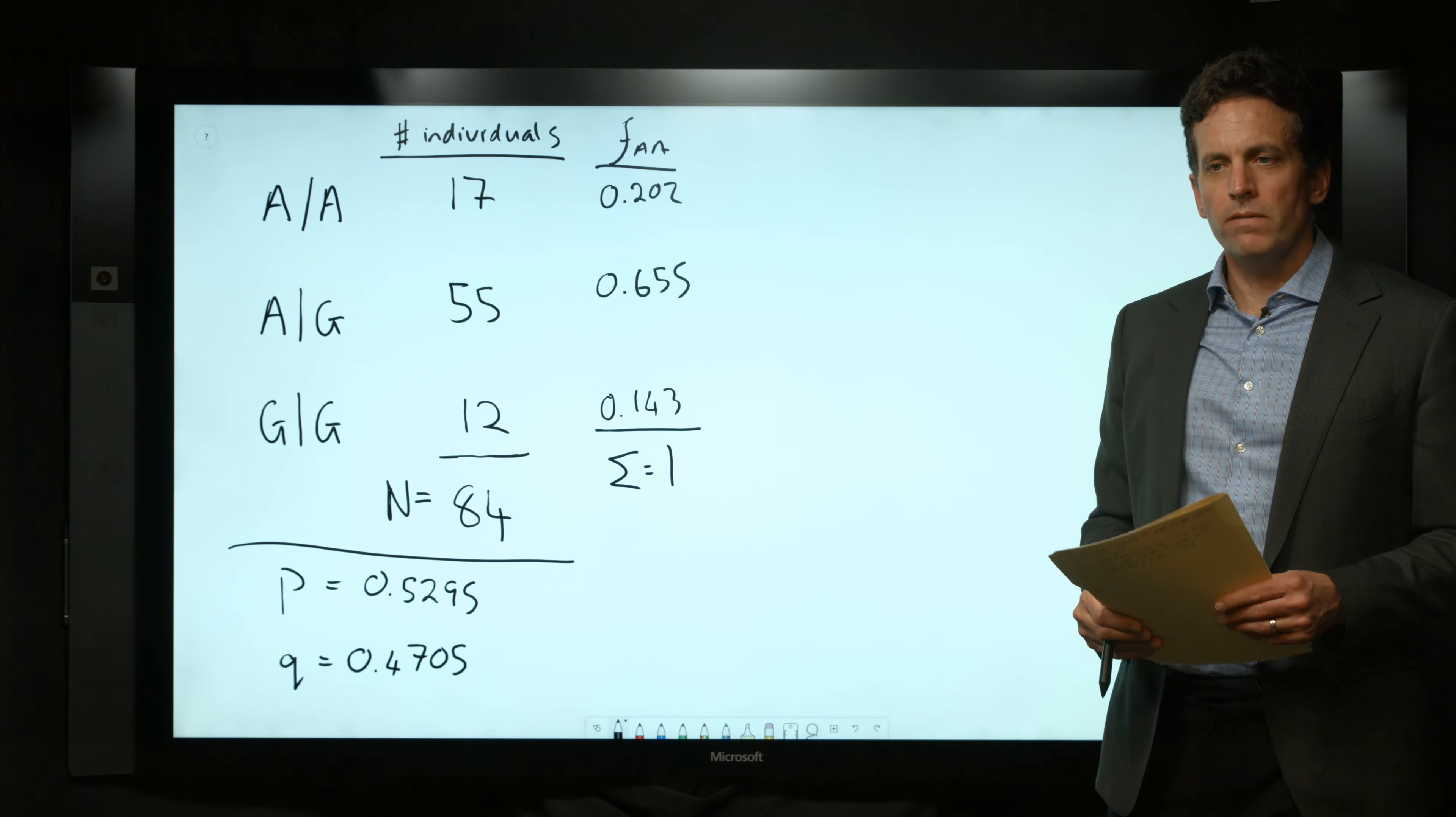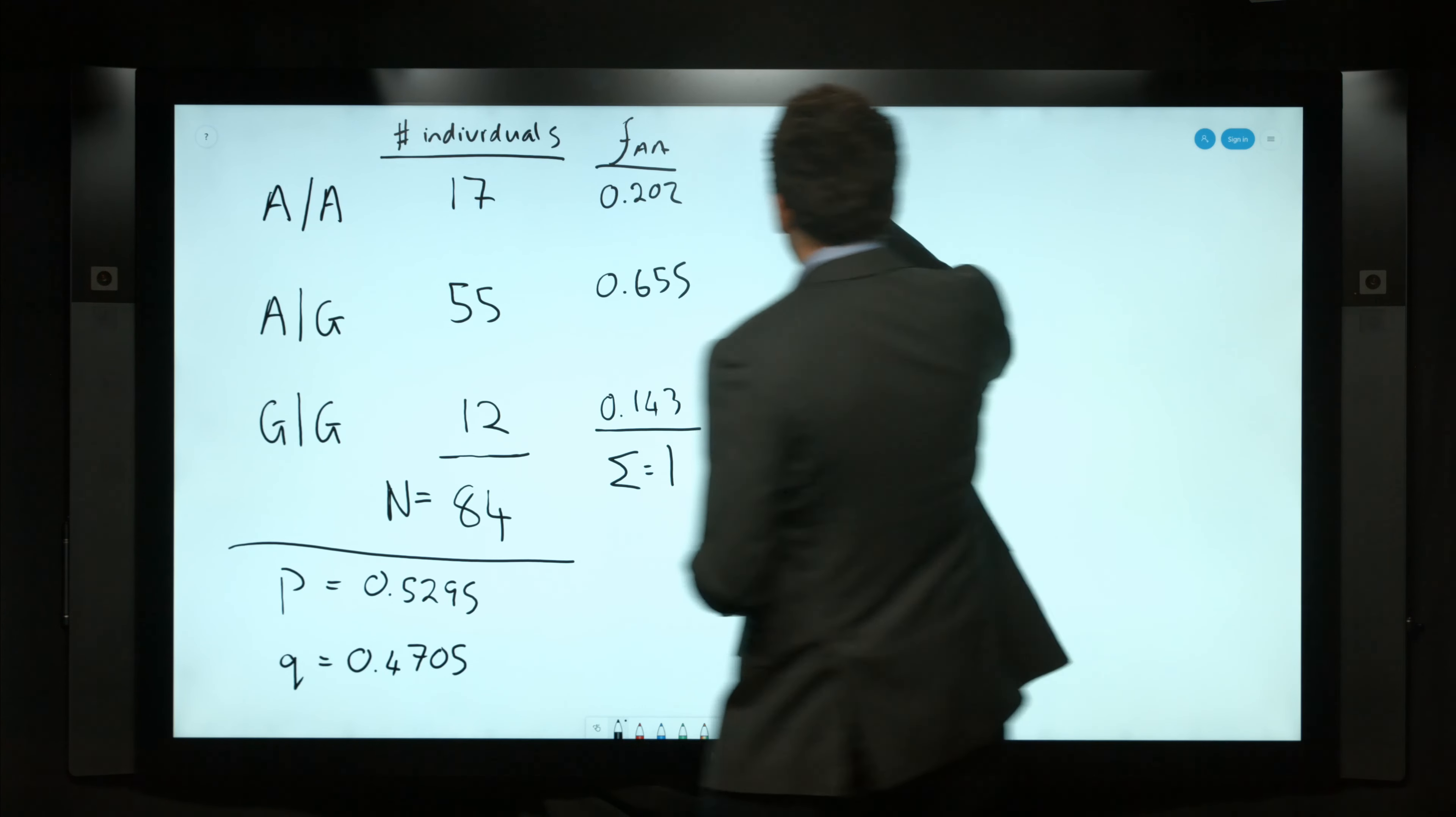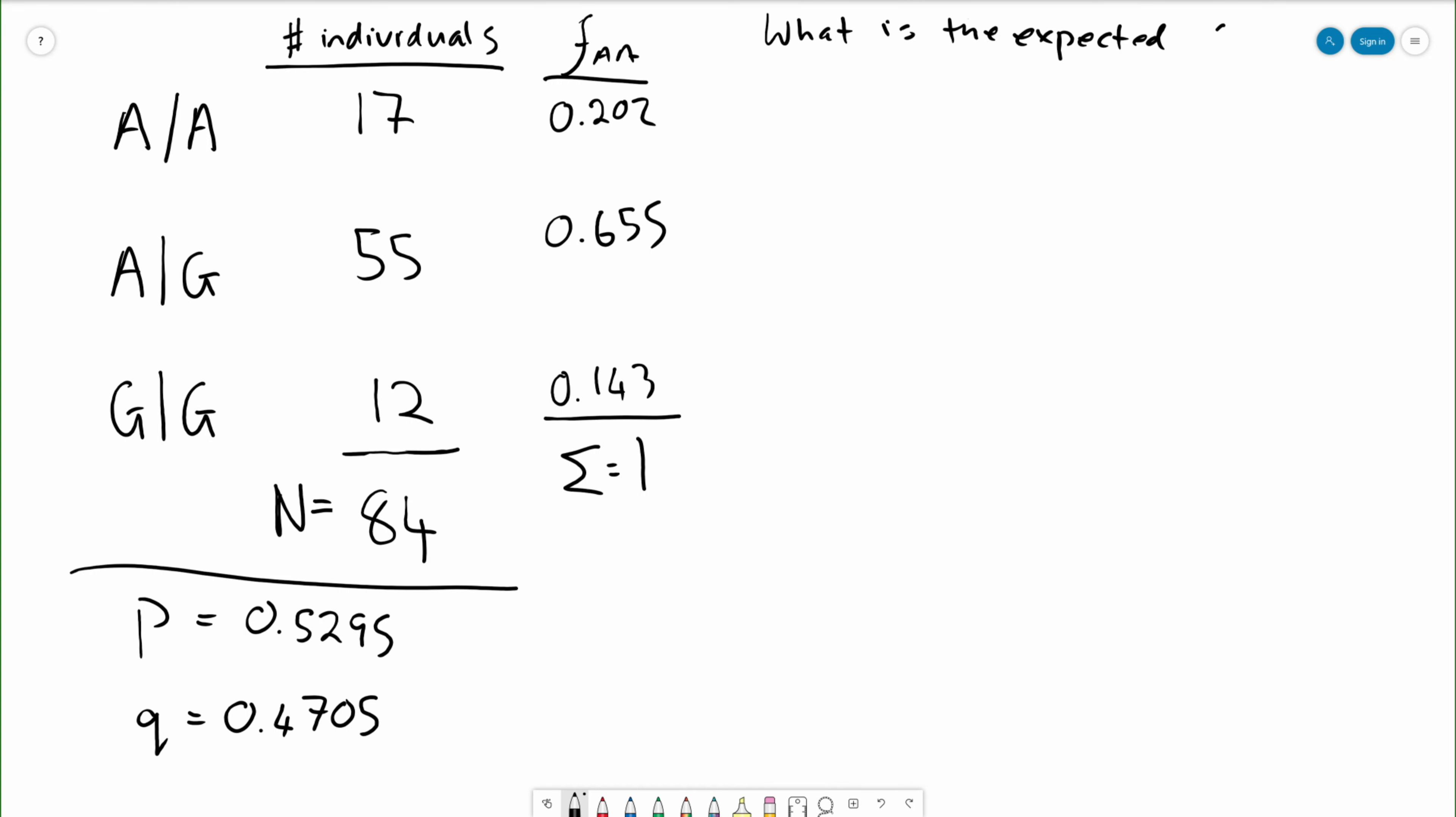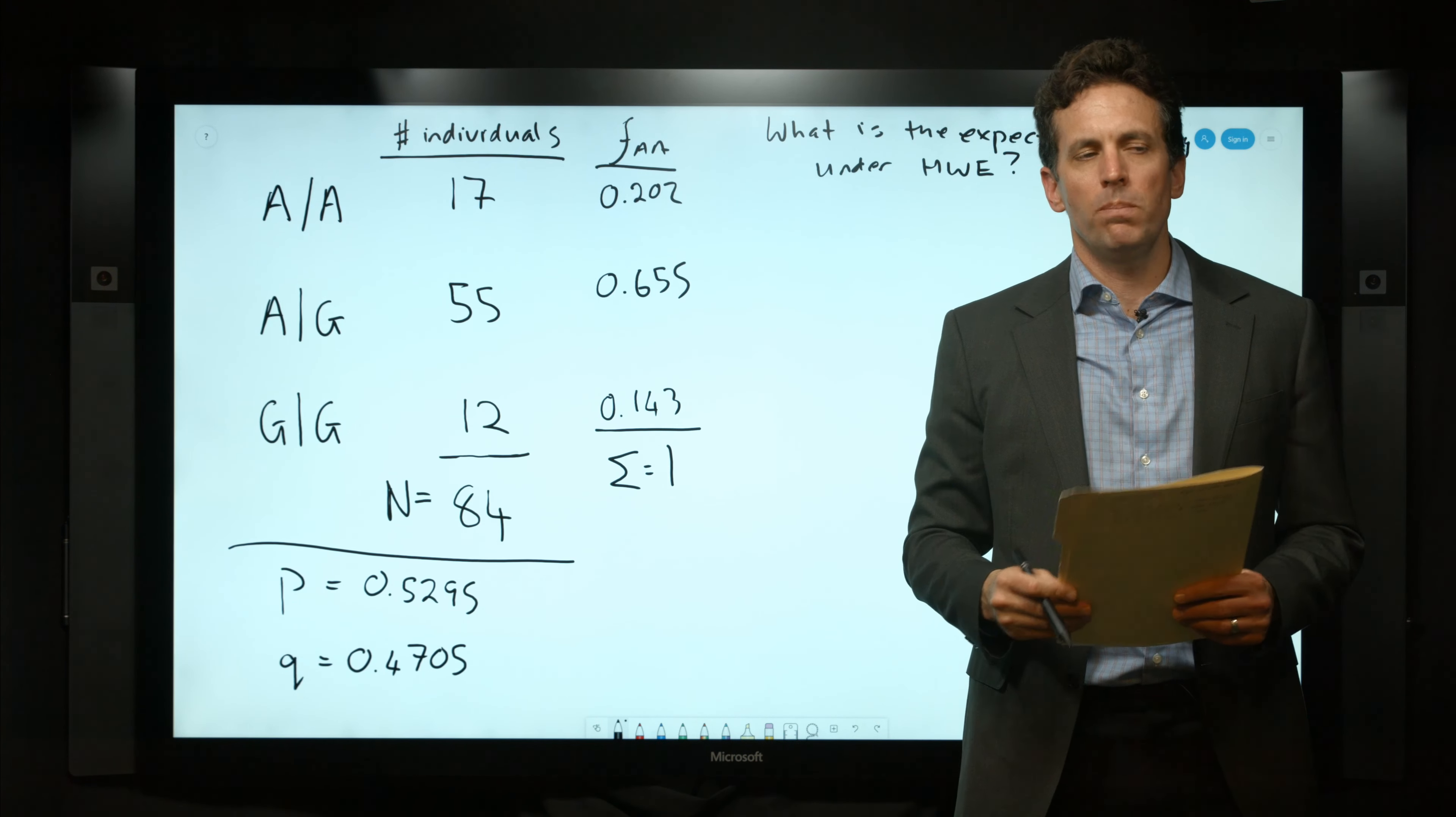But we can ask the question: what is the expected frequency under Hardy-Weinberg equilibrium? Of course, you remember the formula for Hardy-Weinberg equilibrium: P² + 2PQ + Q² = 1.